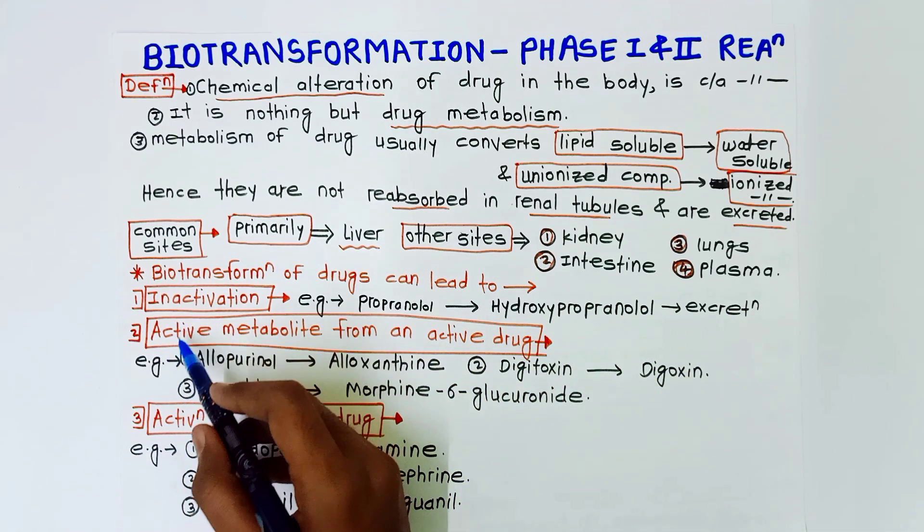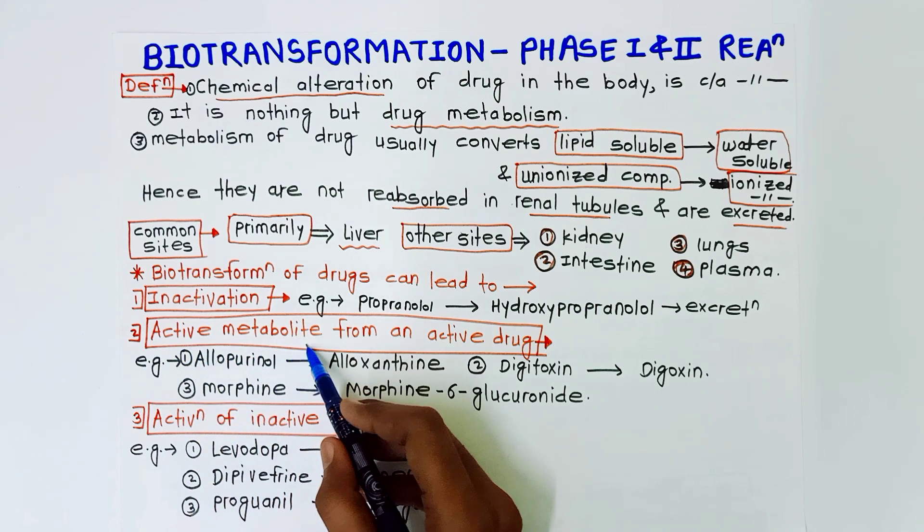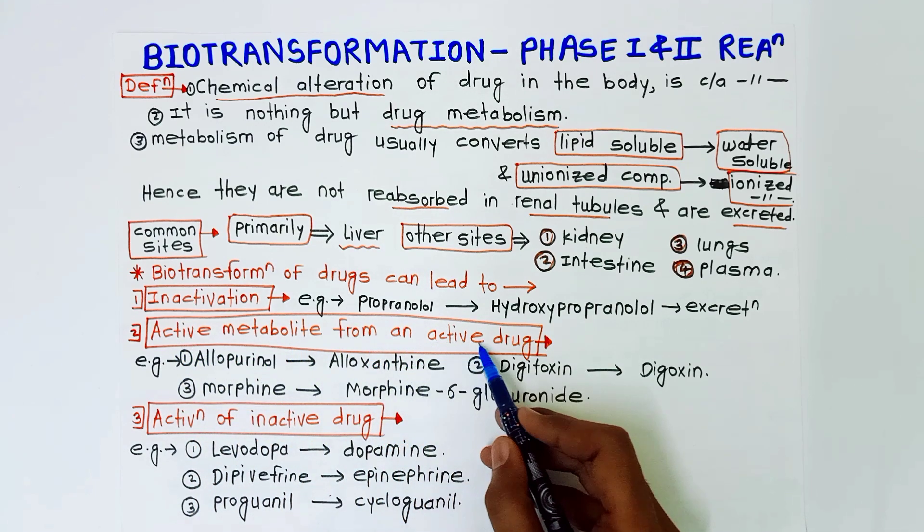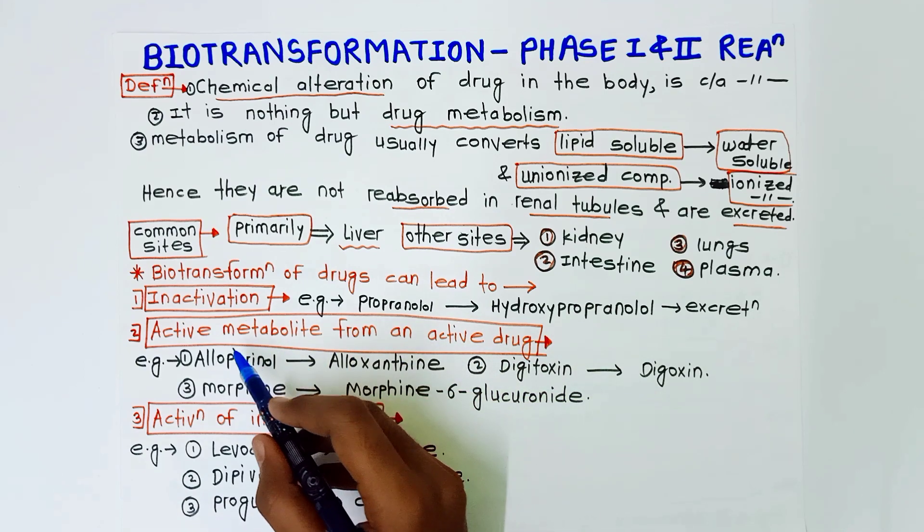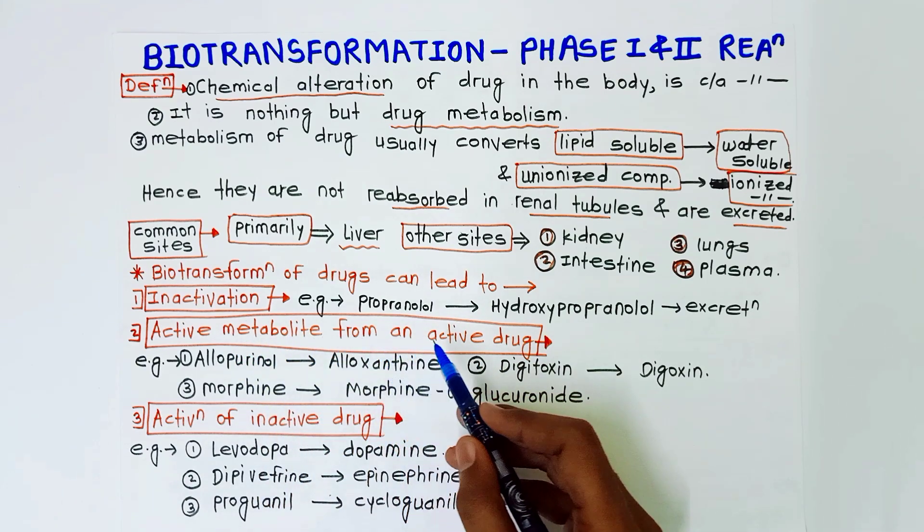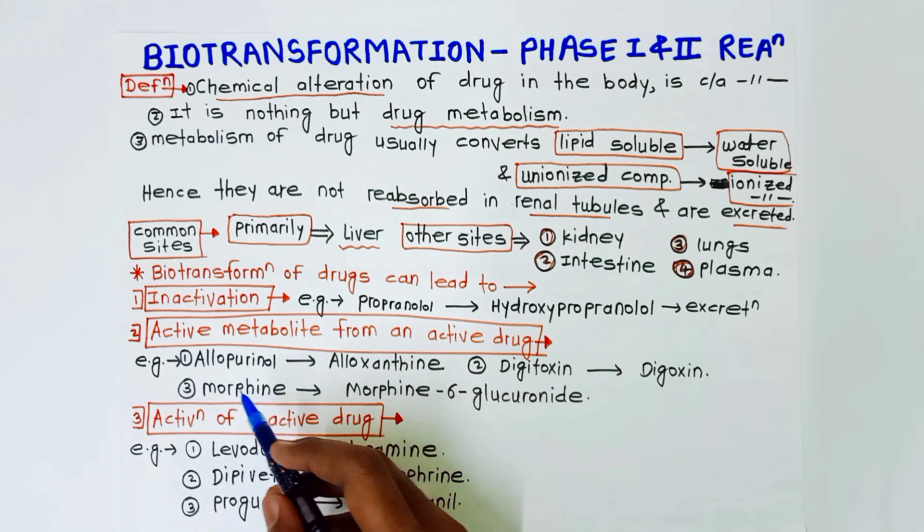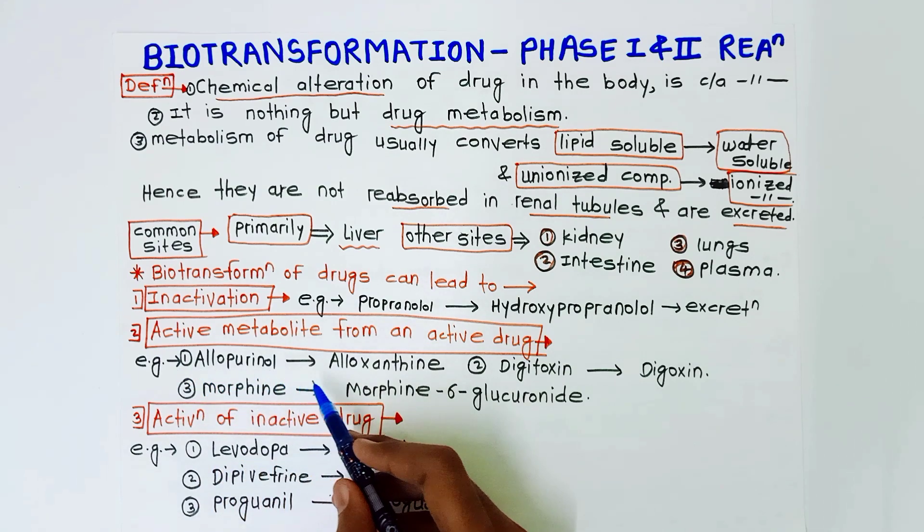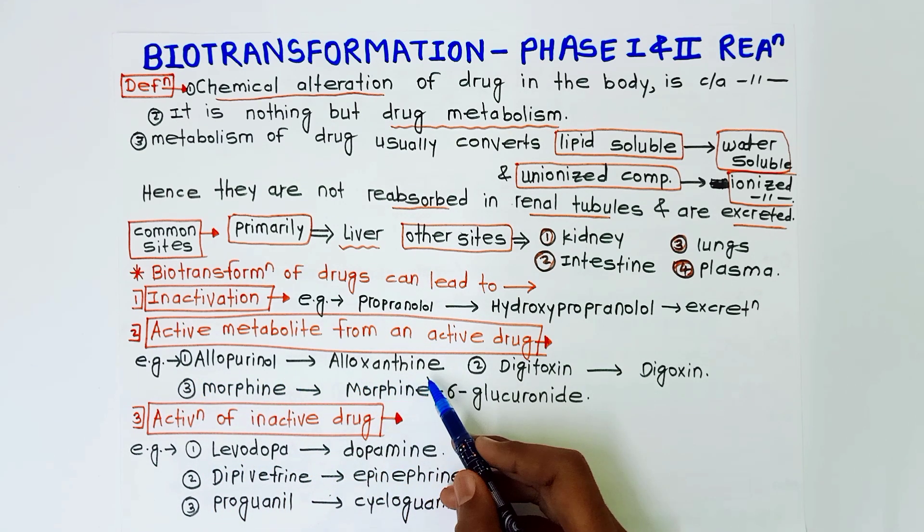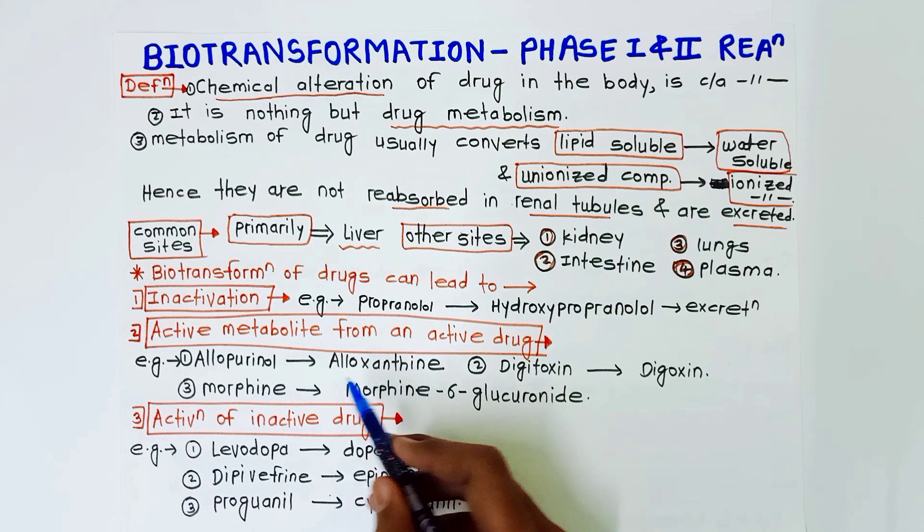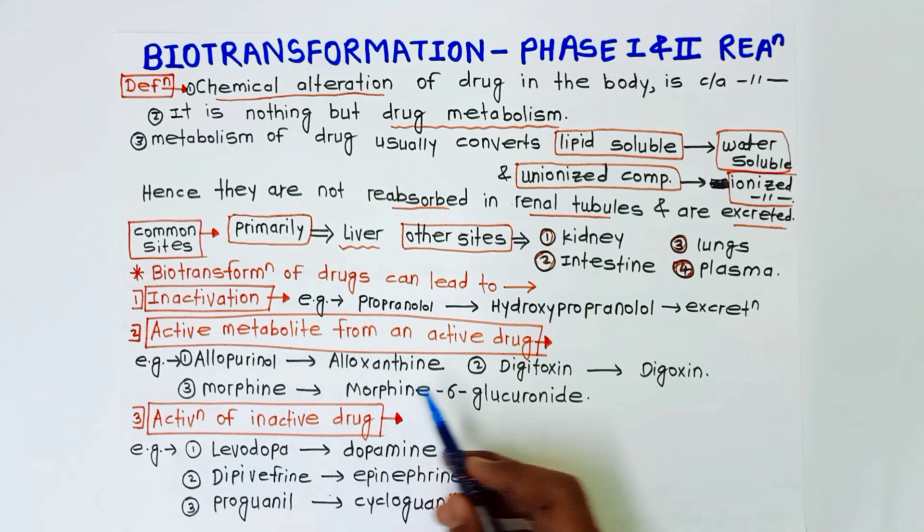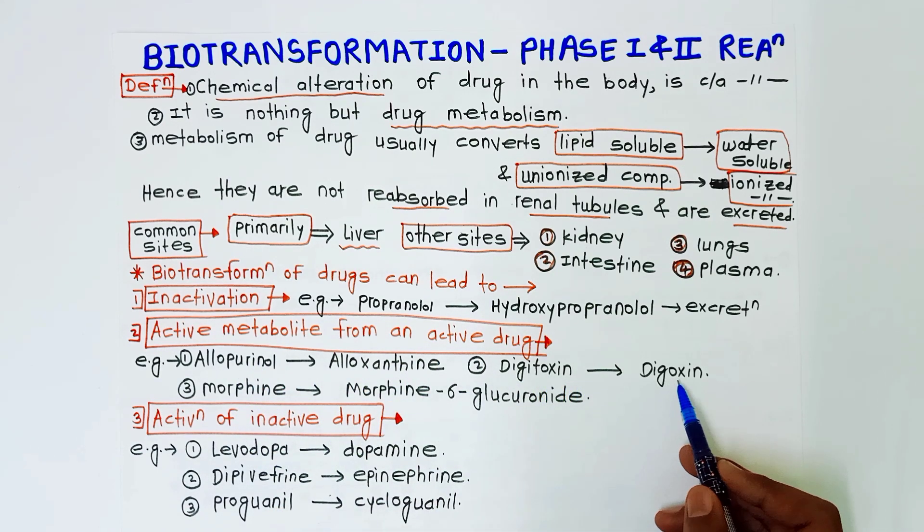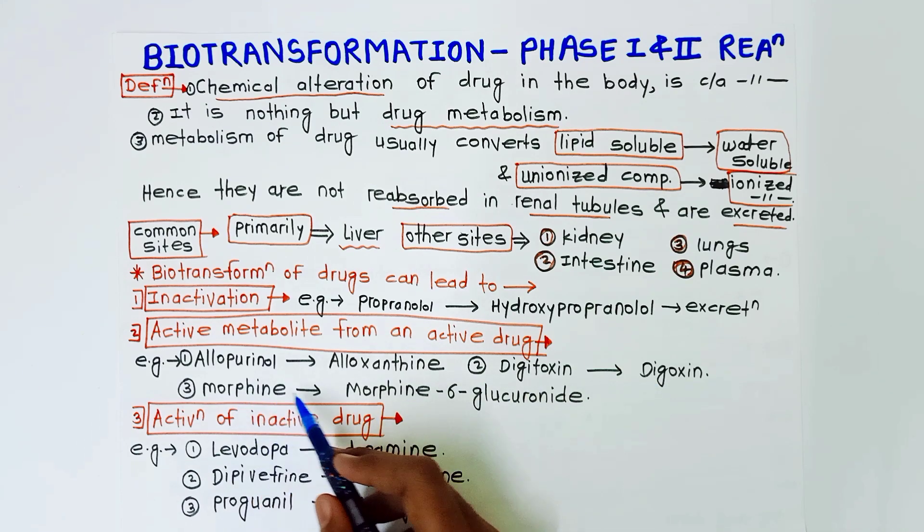Or it can be active metabolite from an active drug. There is formation of active metabolite from an active drug. Examples are allopurinol converts into alloxanthine, digitoxin converting into digoxin, morphine converts into morphine-6-glucuronide.